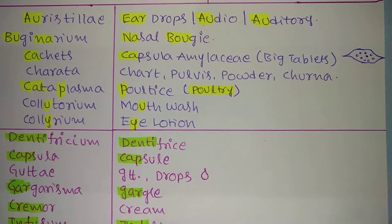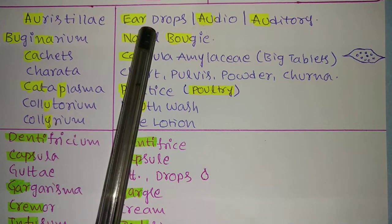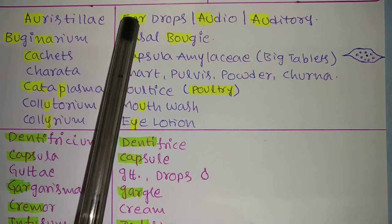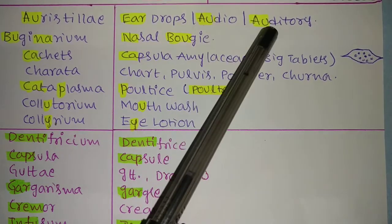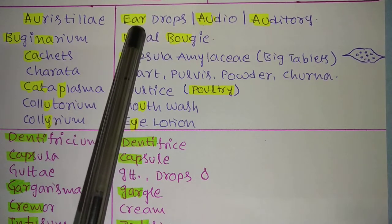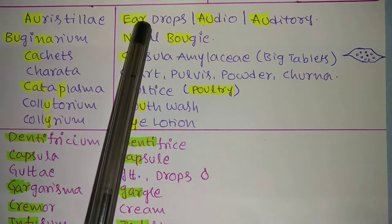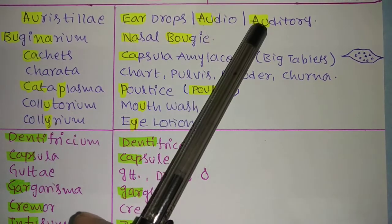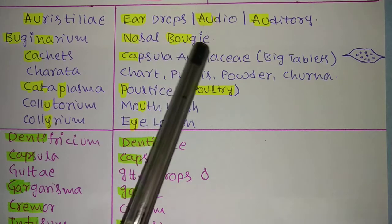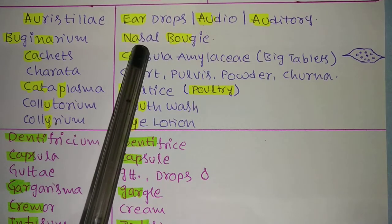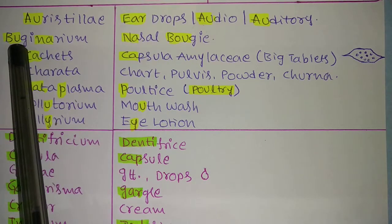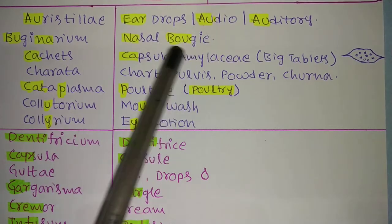First, we will see the Latin name and its meaning. 'Auristilla' means ear drops. You know that 'AU' relates to audio or auditory — ear. Catch those two letters and you can easily find it is ear drops. Most students get confused thinking it means eye drops, but remember: AU = auditory = ear. Next, 'Booginarium' means a nasal boogie, used for the nose. Here you can catch the word 'nasal' to remember it easily.